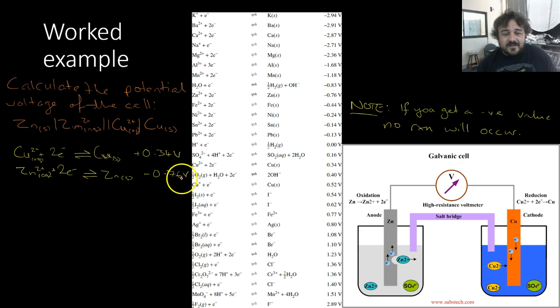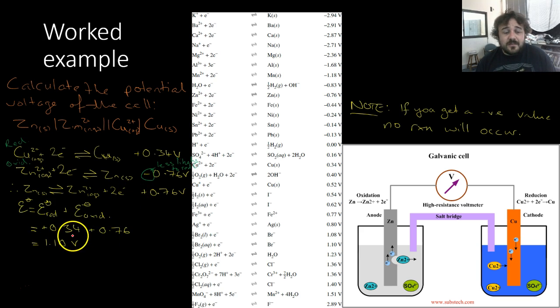Now, because this is minus, that means this one is most likely to oxidize, which means, okay, so that this is our oxidant. No, this is our oxidized species. This is our reduced species. So, we turn this one around, and in doing so, we reverse the sign.